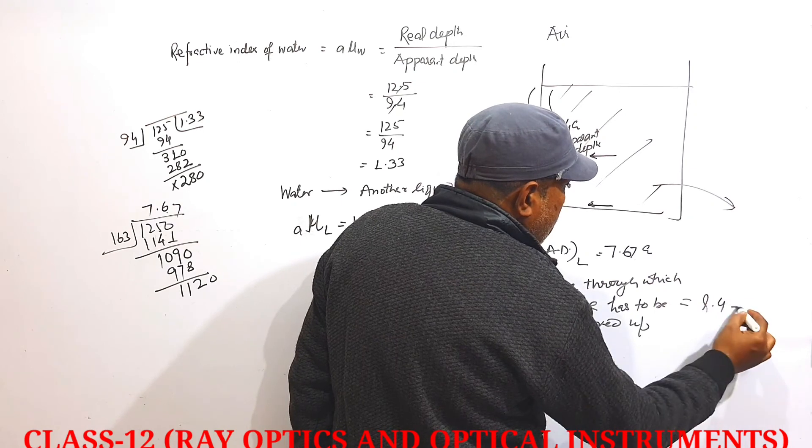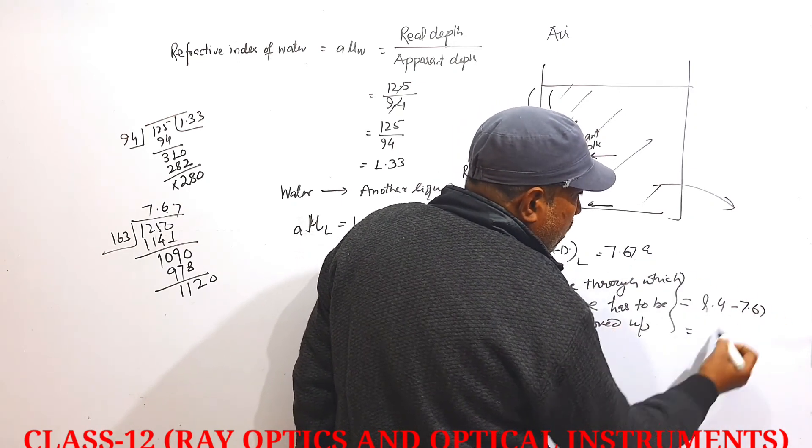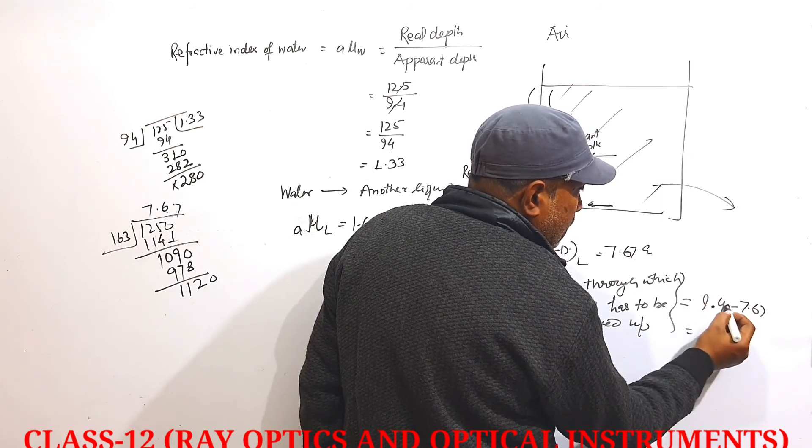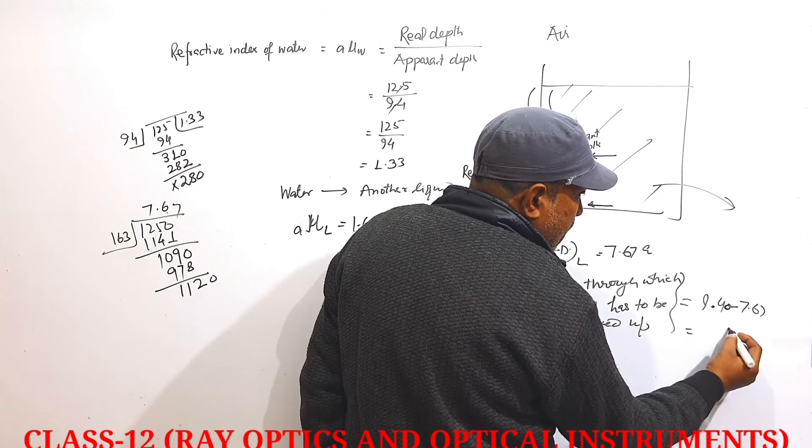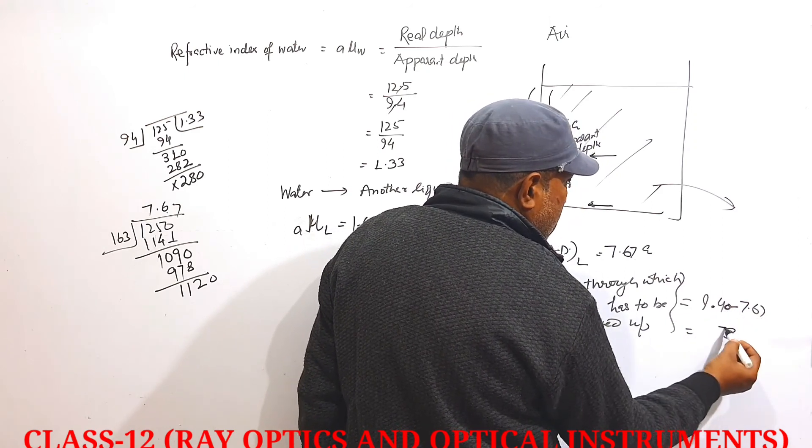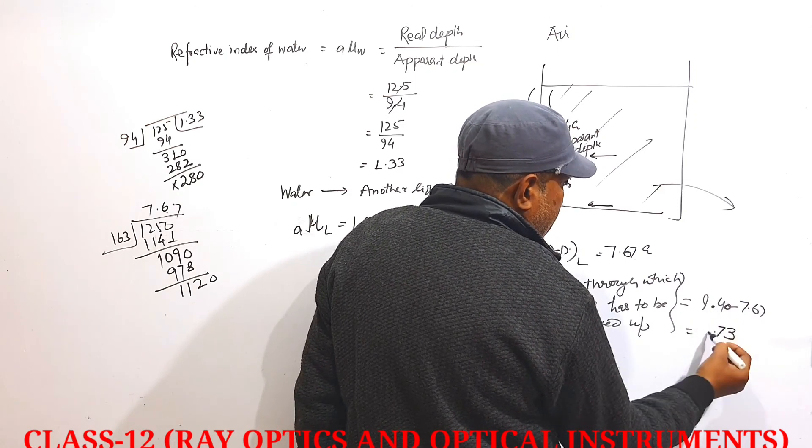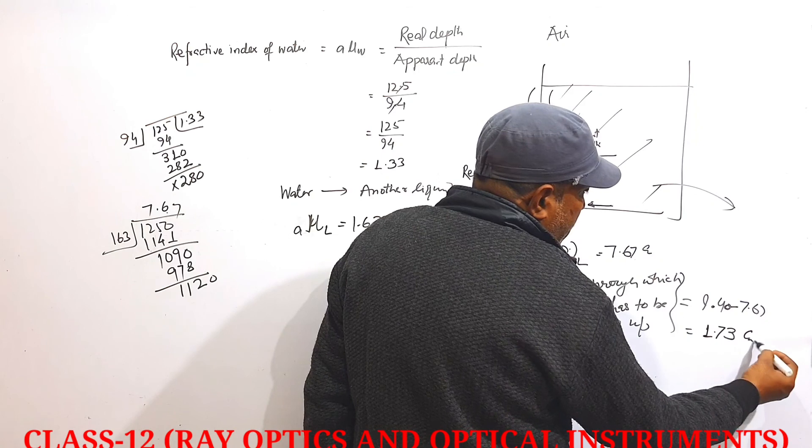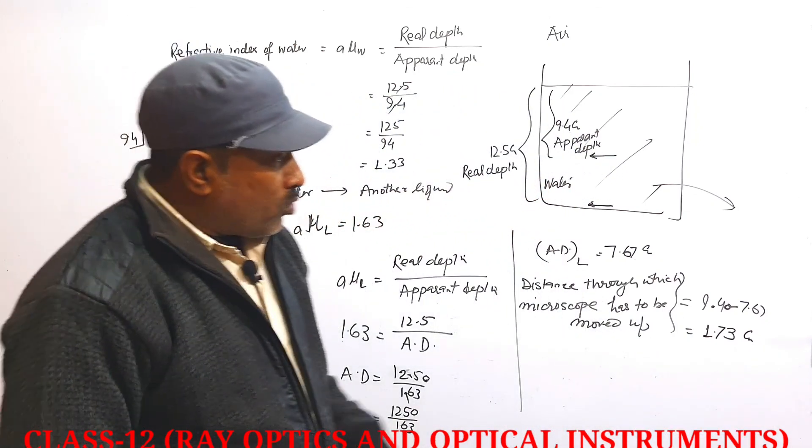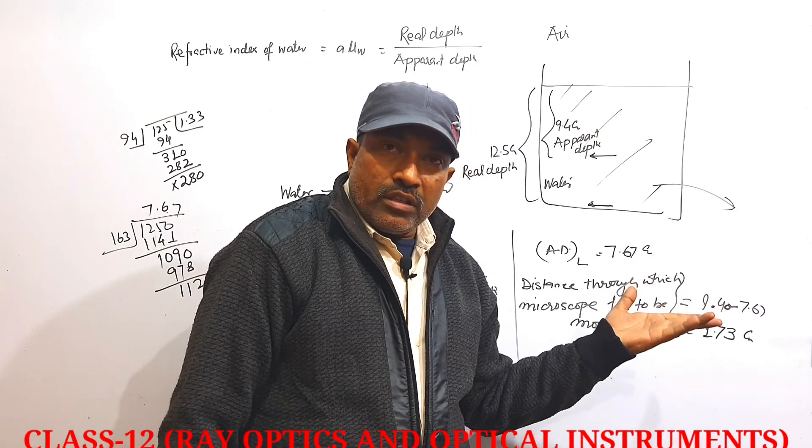Initially it was 9.4 centimeters, now it is 7.67. Taking the difference: 9.4 minus 7.67. Calculating step by step, this gives 1.73 centimeters. The microscope will focus 1.73 centimeters upward.